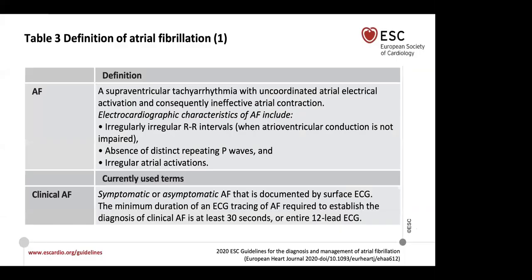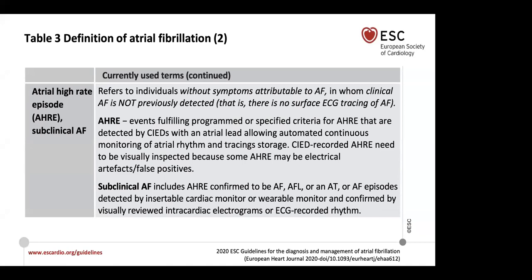The definition of atrial fibrillation is quite basic — it's a supraventricular tachyarrhythmia, primarily based on an irregularly irregular RR interval with absence of distinct P waves and the presence of irregular atrial activation. Clinical atrial fibrillation is a term used to define people who are both symptomatic or asymptomatic, diagnosed using 12-lead ECGs or at least a 30-second rhythm strip. Another new term is an atrial high-rate episode — detected by a cardiac implantable electronic device (CIED), subsequently reviewed by a clinician, and referencing an individual who may be at risk for atrial fibrillation.